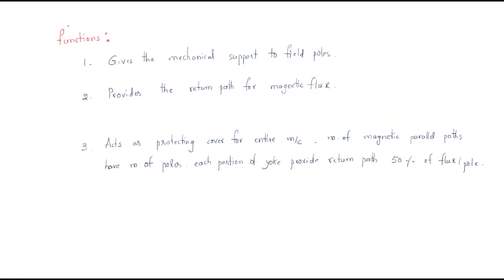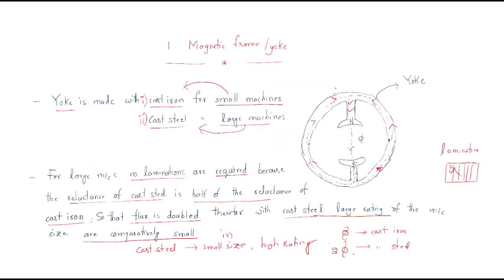Here we should discuss some functions regarding the magnetic yoke. First, it gives mechanical support to the field poles. These are the field poles — this is the north pole and this is the south pole. The circular magnetic yoke gives them mechanical support. Without having this magnetic yoke, the machine has low mechanical strength.